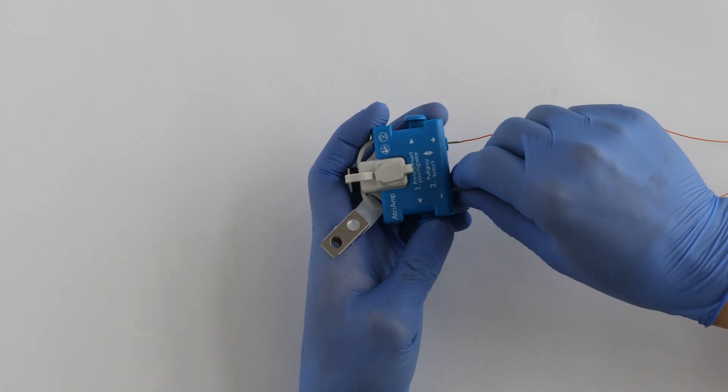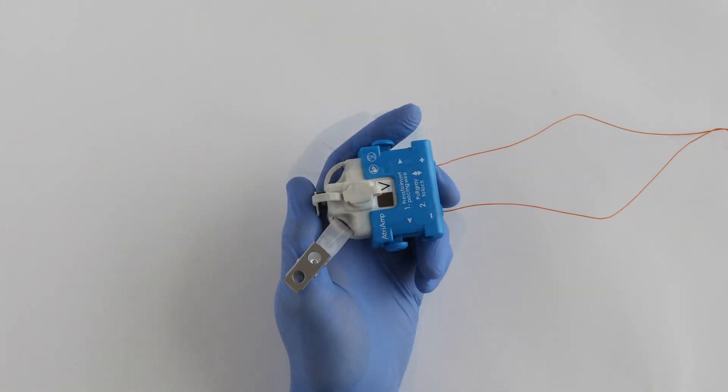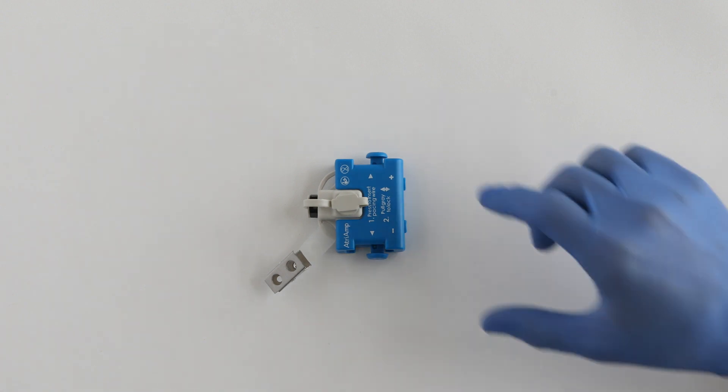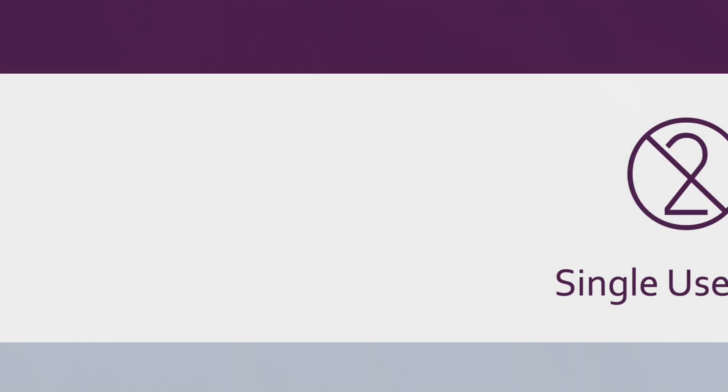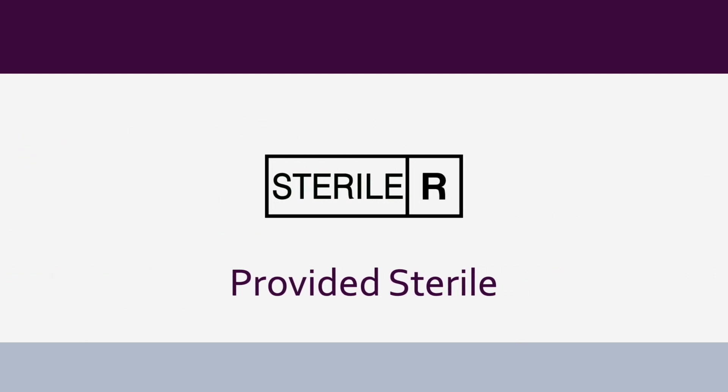Epicardial wires can be released from the AtriAmp by pressing the button from the corresponding side. The buttons can be pressed while the AtriAmp is in either of the pacing lead cover positions. Dispose of the AtriAmp. The AtriAmp was designed as a single-use device and was not cleared by the FDA for use on multiple patients. The AtriAmp and each accessory cable is provided in a double sterile pouch for aseptic presentation in the surgical suite.